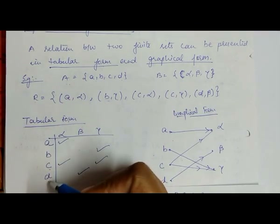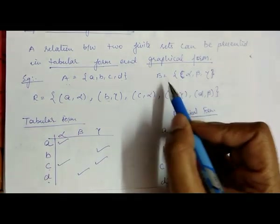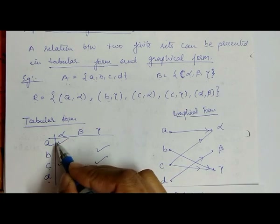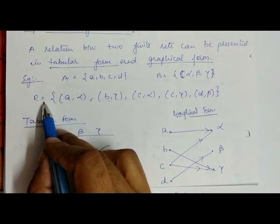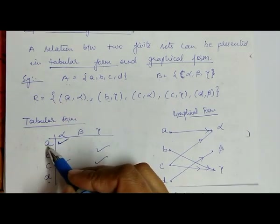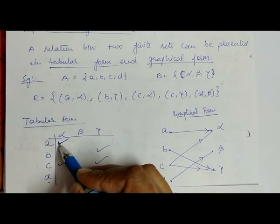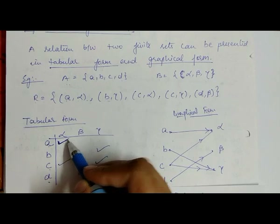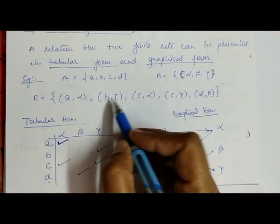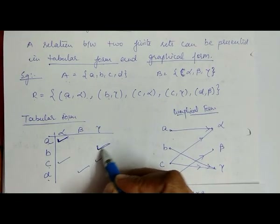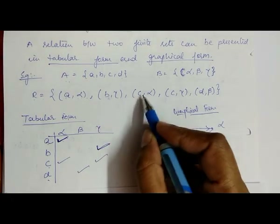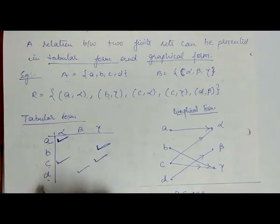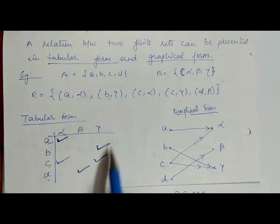In tabular form, the rows represent all elements of set A — that is a, b, c, d — and the columns represent all elements of set B — that is alpha, beta, and gamma. We check each pair: (a, alpha) is in R so we mark it; then (b, gamma), (c, alpha), (c, gamma), and (d, beta) are each marked accordingly.